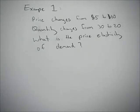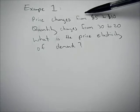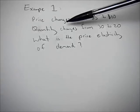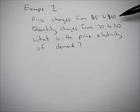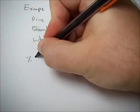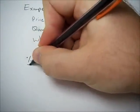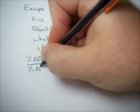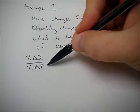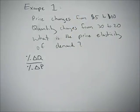For the first example, we have price changing from $5 to $10 — increasing $5 — and quantity changing from 30 to 20, so a decrease of 10 units. What is the price elasticity of demand? We know from before that it's the percent change in quantity over the percent change in price — quarter pounders, remember? But now we have to find the percent change in quantity and the percent change in price.